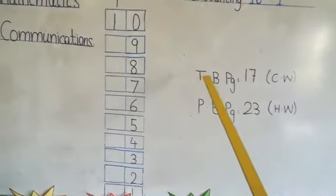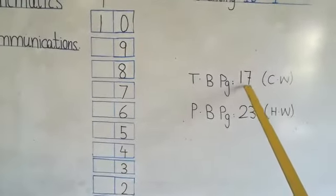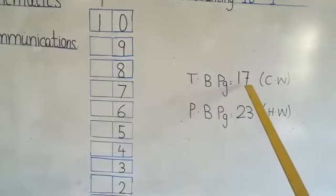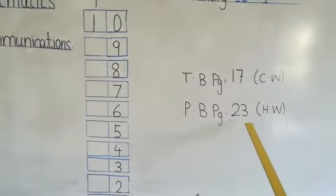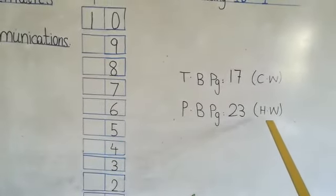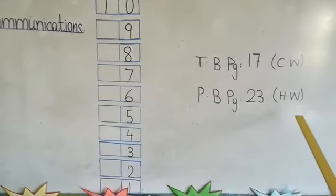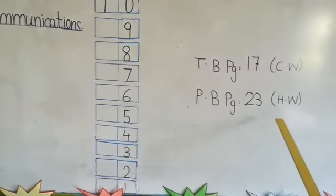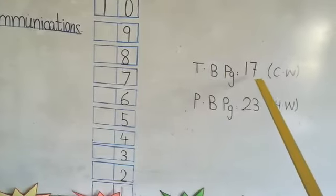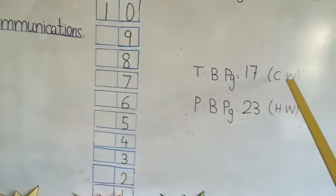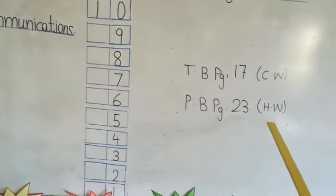Now go to your textbook page number 17. This page is for your classwork and practice book page number 23 is as a homework. Now all of you, write the backward counting on both two pages.